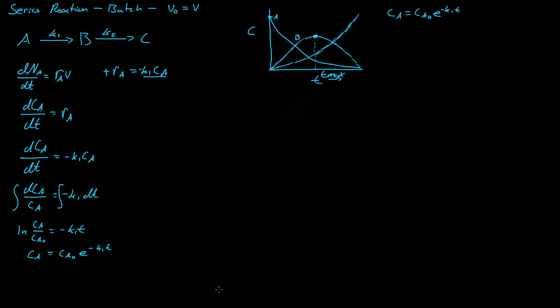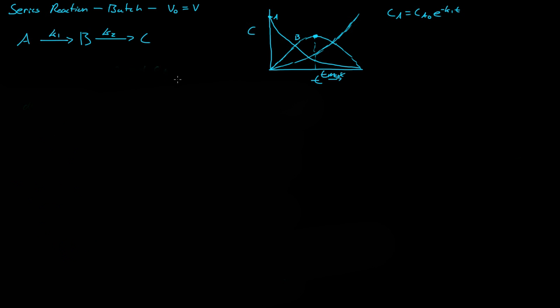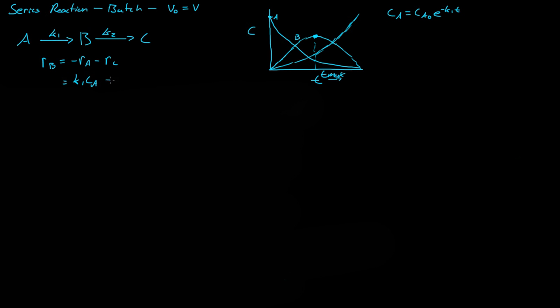Next we want to find the concentration of B. Let's first find the reaction rate of B. So r_B is equal to negative r_A minus r_C. The negative reaction rate of A gives us the generation of B, and we subtract the production of C because B is going to C. Plugging in the rate expressions, we get K1 times C_A minus K2 times C_B. For a constant volume system, that means this equals dC_B over dt.